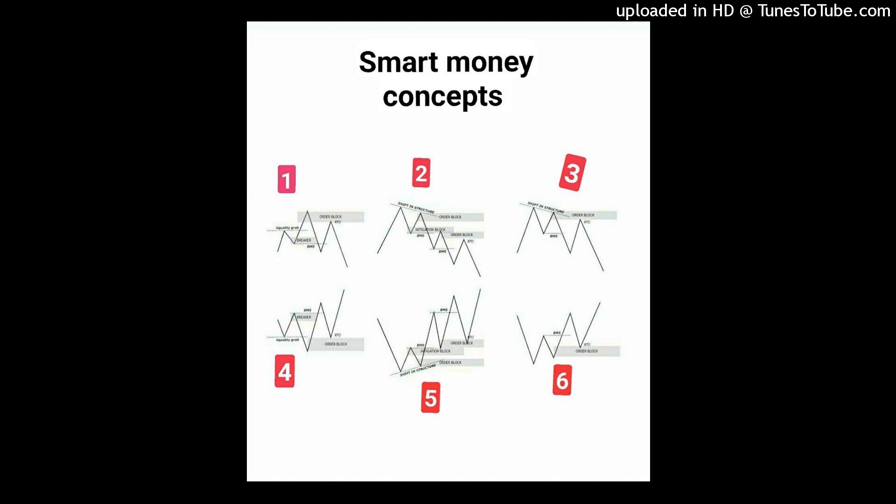If you're going counter-trend, be realistic with your targets. You'll look for positions to buy from, take partials at structure points, and leave a little running in case price continues. We don't know that price is going to react to an OB — price is unpredictable — so that's why we take partials and manage risk carefully.